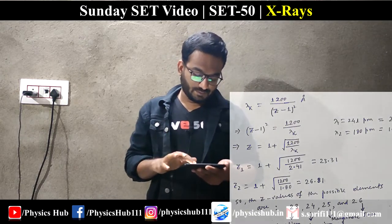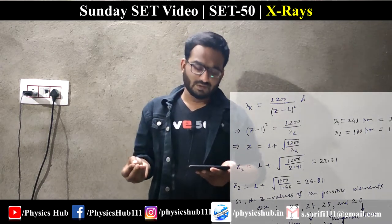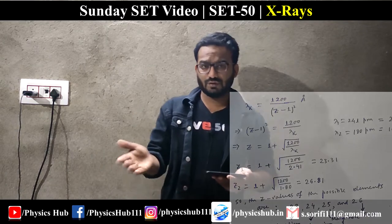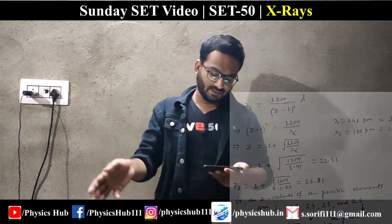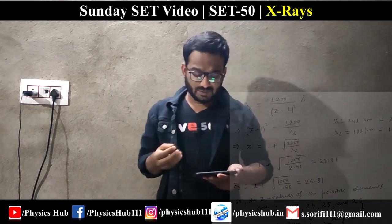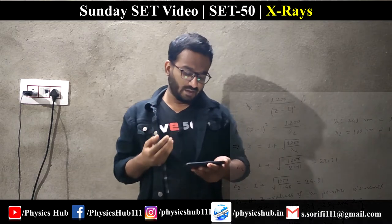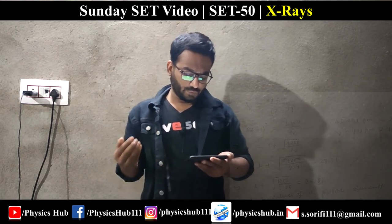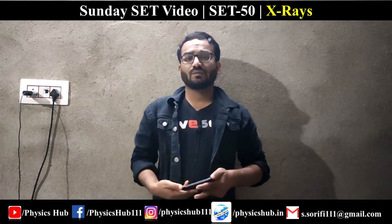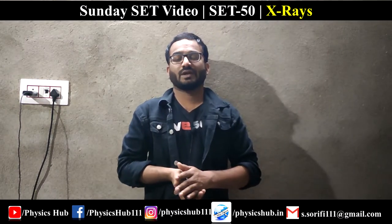The possible integer values of Z are 23, 24, 25, and 26. The corresponding elements are vanadium, chromium, manganese, and iron. In this video we have discussed all five problems from set 50.